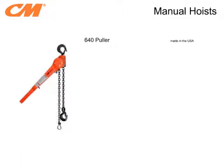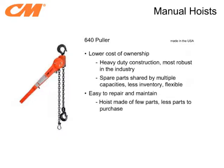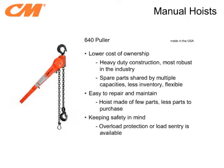First we'll look at the 640 Puller. This hoist provides the greatest value and a lower cost of ownership by having a robust design that keeps working even under the harsh conditions of a construction site. Since multiple hoist capacities share common parts, there are fewer spare parts to carry and your inventory can be reduced yet remain flexible. This hoist is comprised of only 14 parts, which makes it easy to repair and maintain. A load sentry, or overload protection, is an option on the 640 Puller.